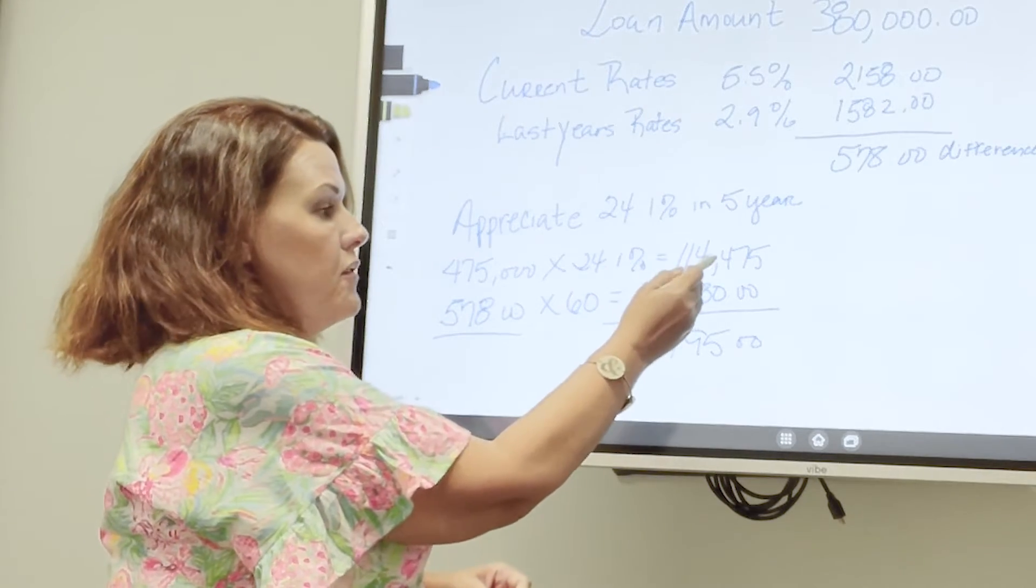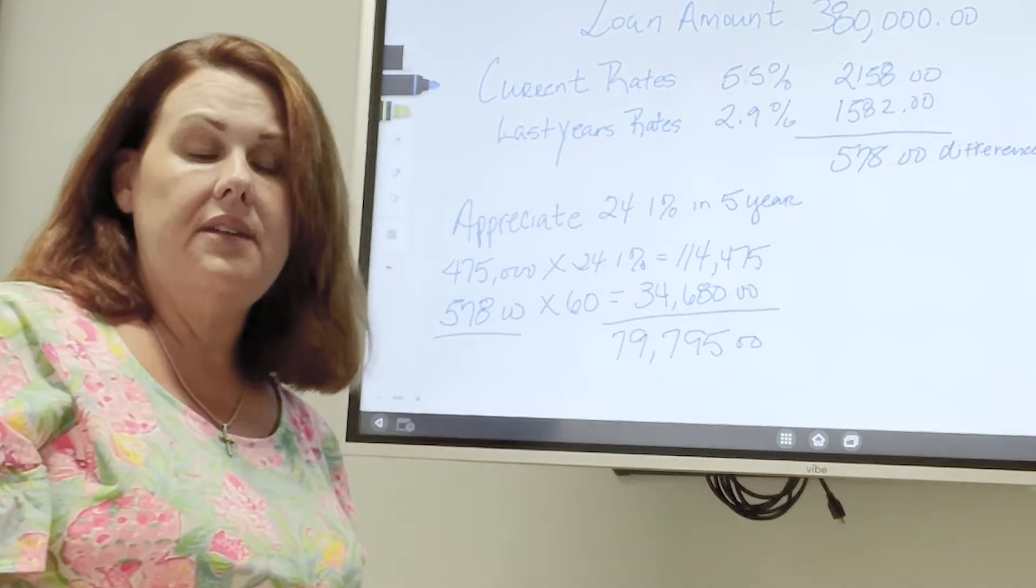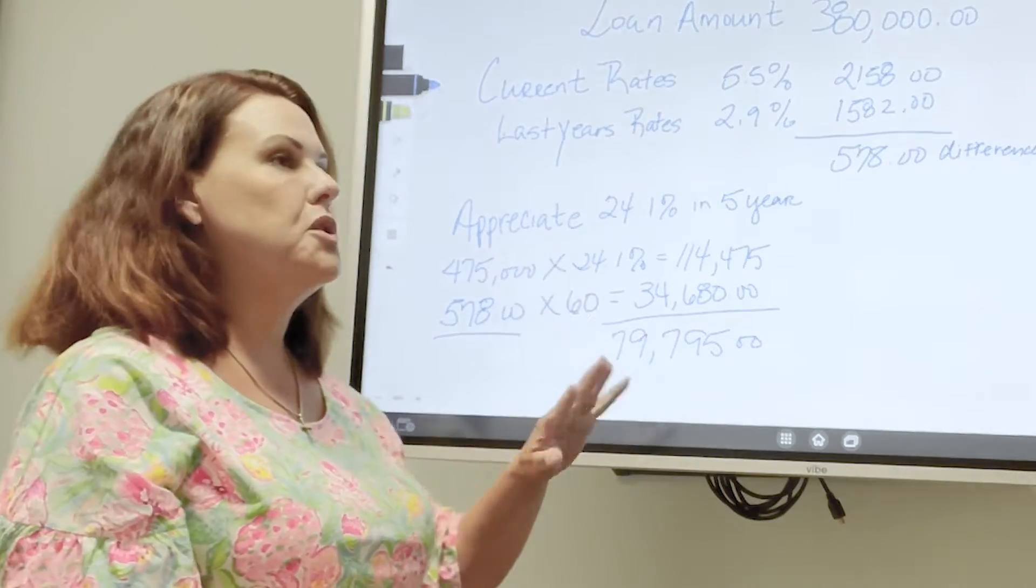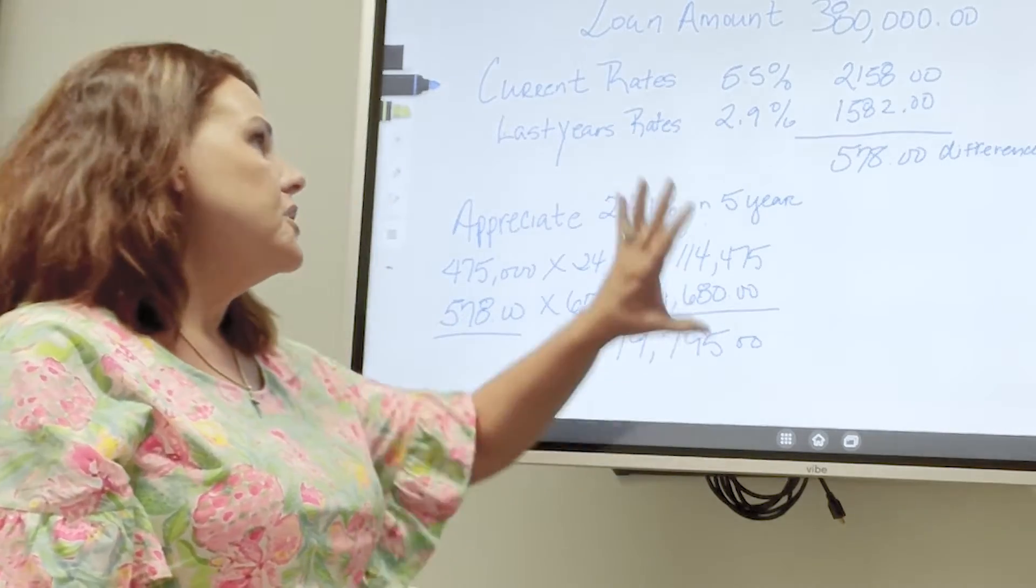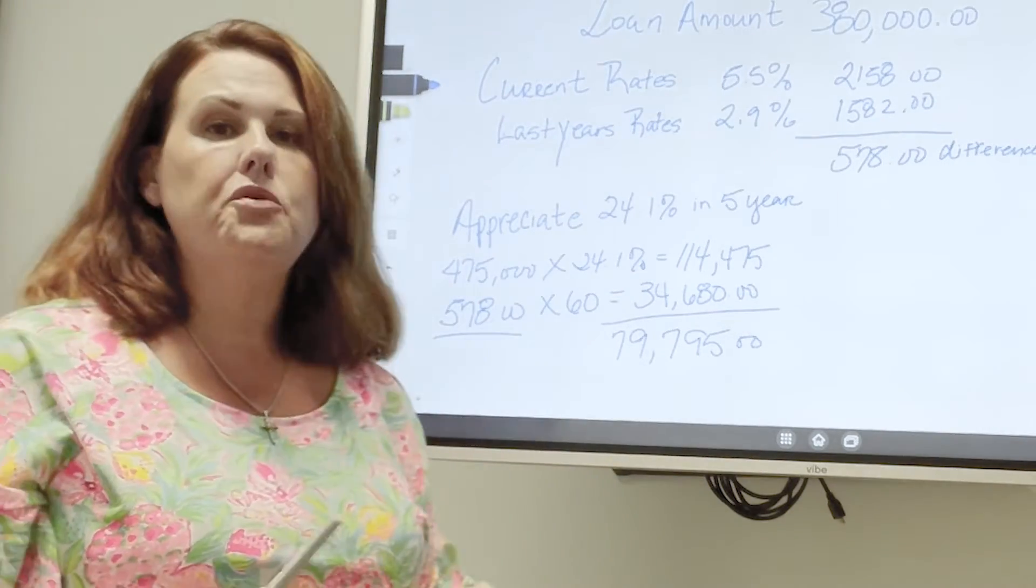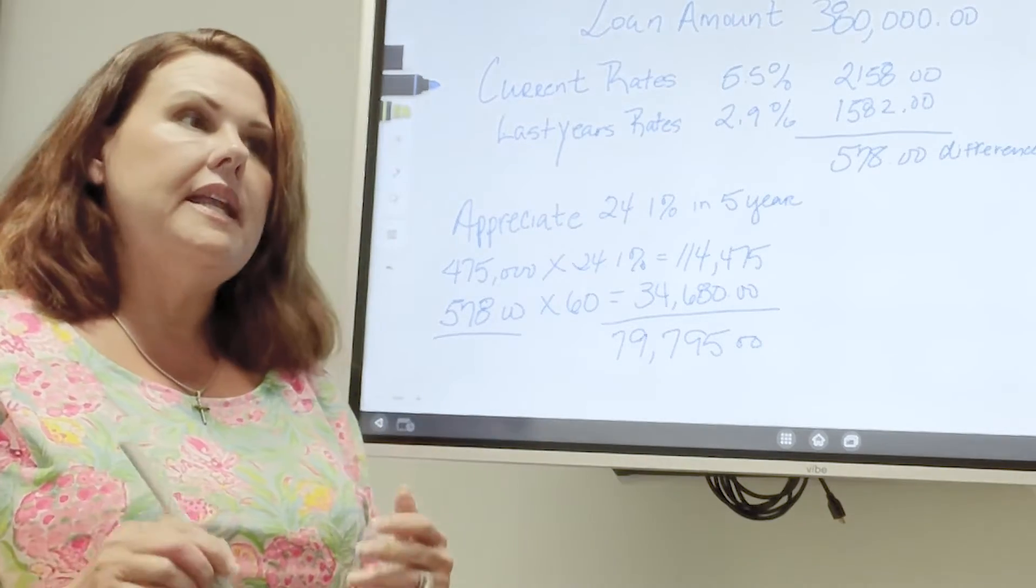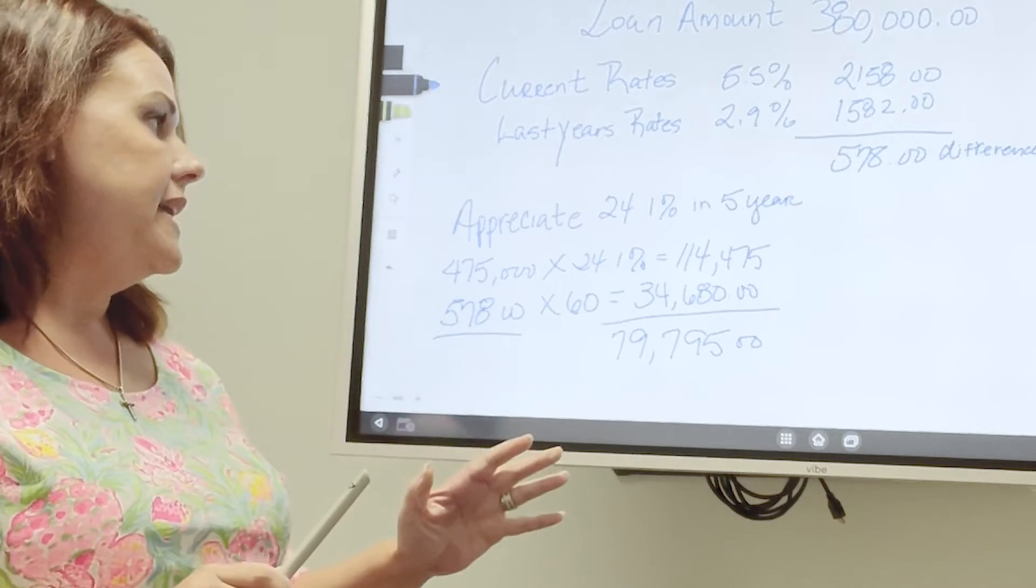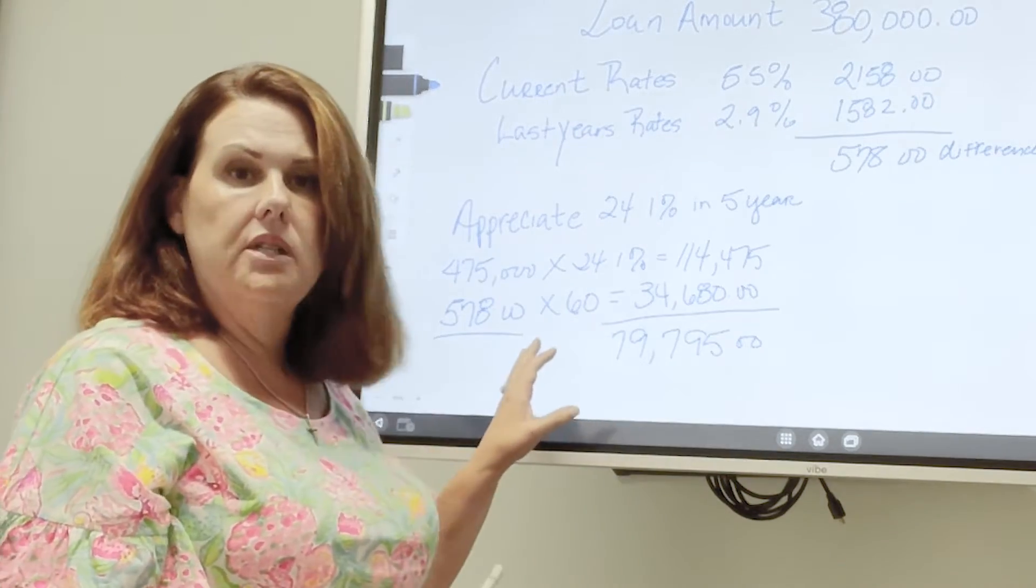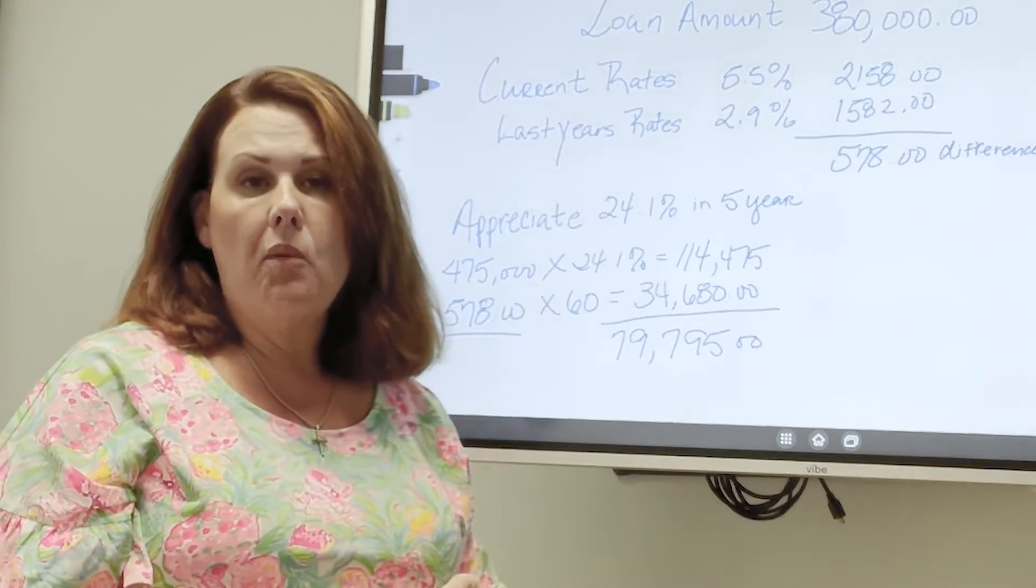If you subtract that from what you've appreciated, you're still going to get $79,795 and that is before you actually amortize the mortgage that you would have. So there is a ton of savings here and even though it's great to have a lower interest rate, it is not going to help you by any means to wait and lose $80,000 that will continue to appreciate as numbers and prices go up in our market.